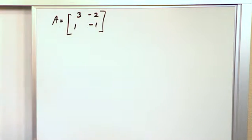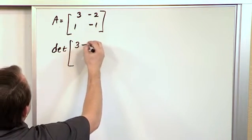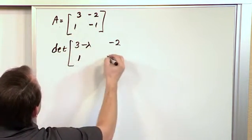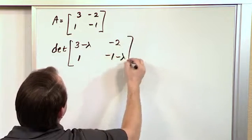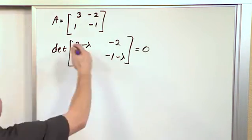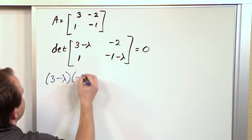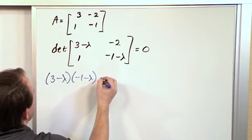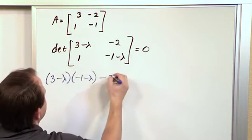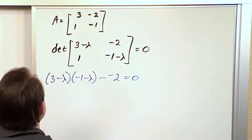You want to find the eigenvalues of that and so I take the determinant of 3 minus lambda, negative 2, 1, negative 1 minus lambda. I just do this, get on the diagonal, set that equal to 0. So I do crisscross like I always do: 3 minus lambda, negative 1 minus lambda and then I subtract negative 2. Okay, so let's go ahead and expand this out.